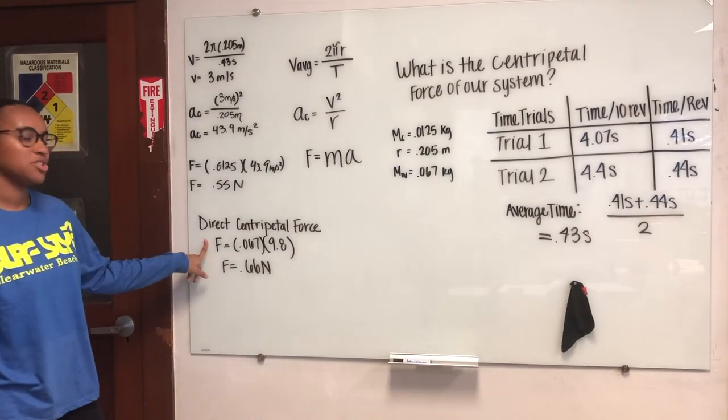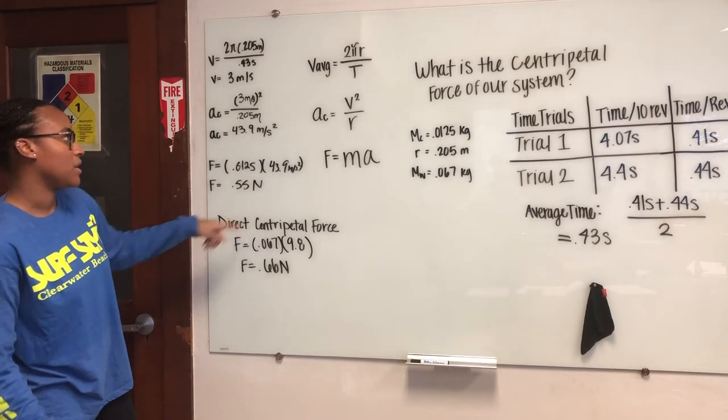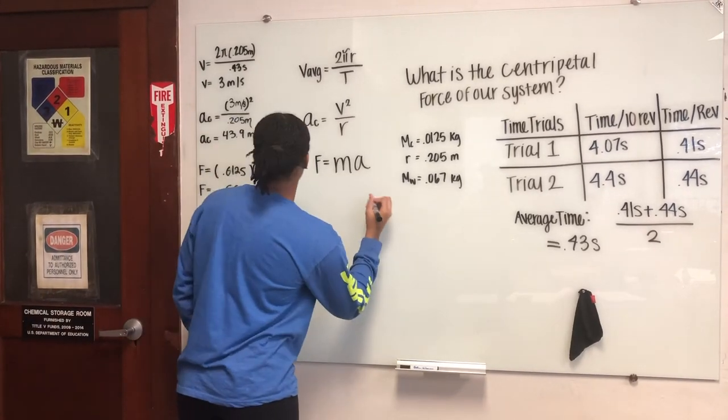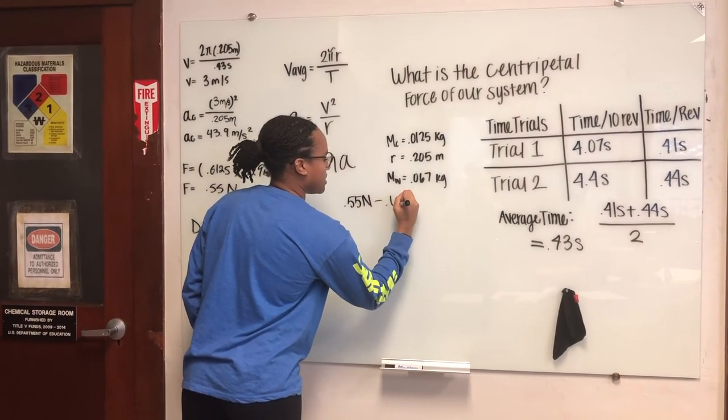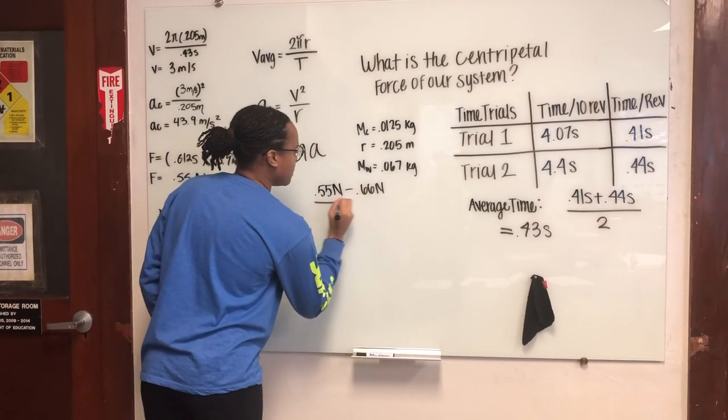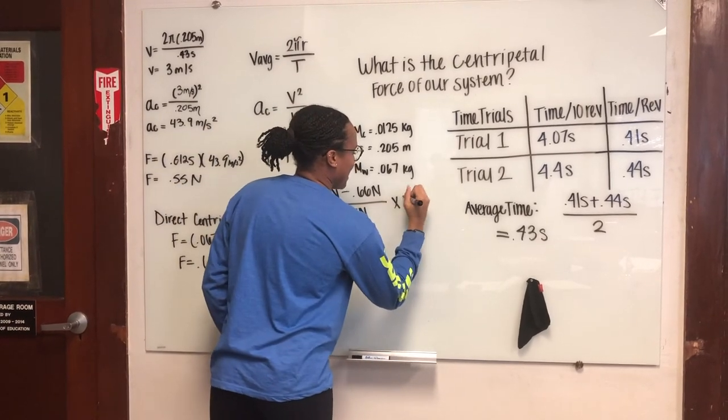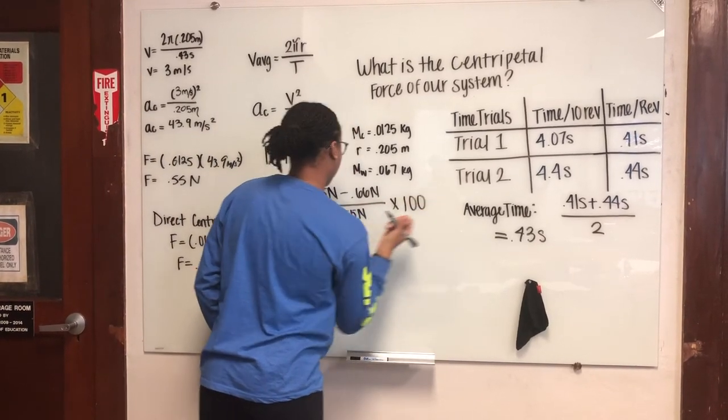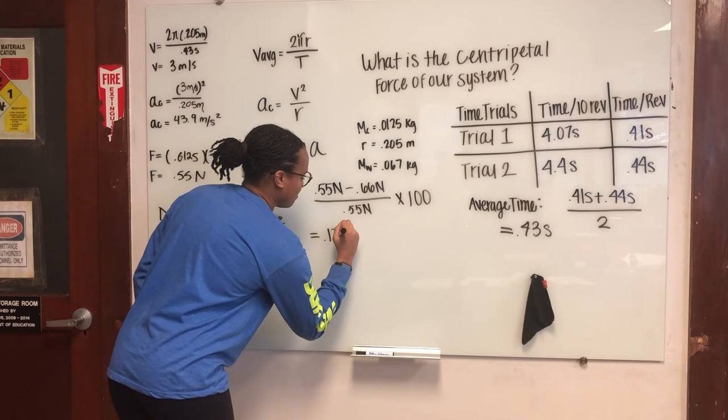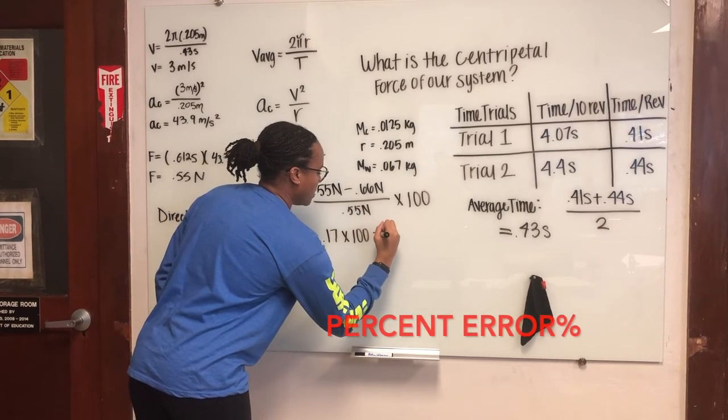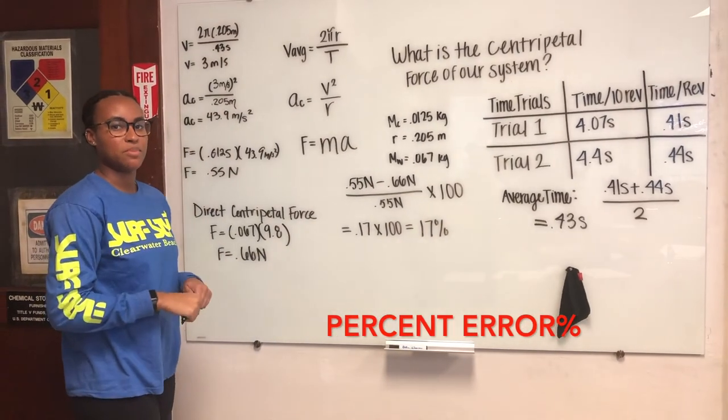So by using the direct centripetal force and the experimental centripetal force, we can find the percent difference of our system. So we're going to do 0.55 newtons minus 0.66 newtons divided by 0.55 newtons, and then multiply that by 100. So we got 0.17 and then times 100 equals 17 percent. So 17 percent will be our percent error.